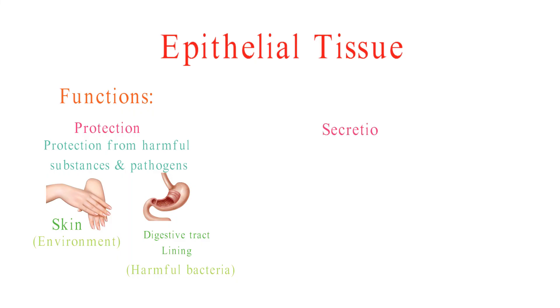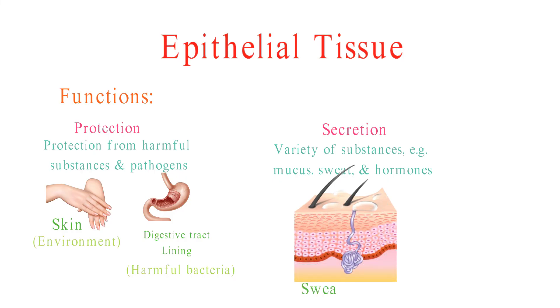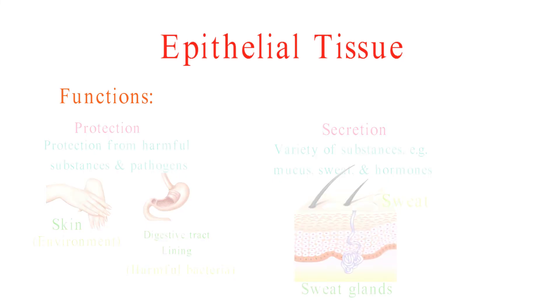Epithelial tissue secretes a variety of substances, including mucus, sweat, and hormones. For example, the sweat glands secrete sweat, which helps to cool the body.